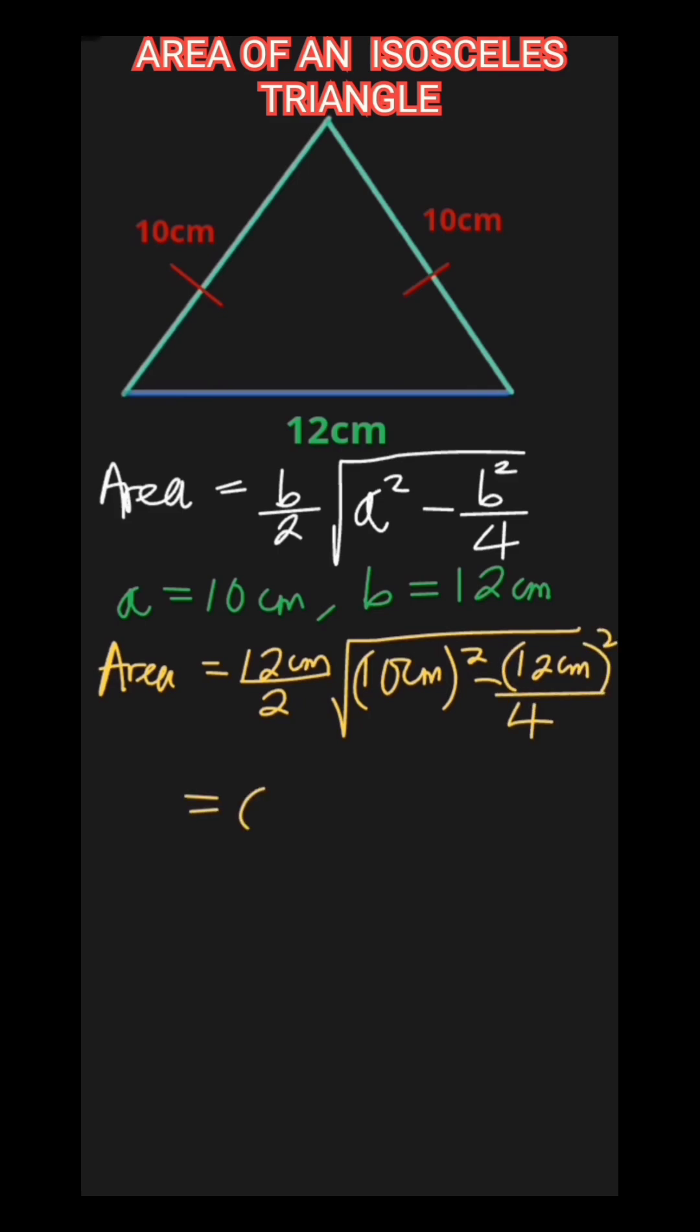This gives 6 centimeters times the square root of 100 centimeters squared minus 144 over 4 centimeters squared, which equals 6 centimeters times the square root of 100 minus 36 centimeters squared. 100 minus 36 is 64.